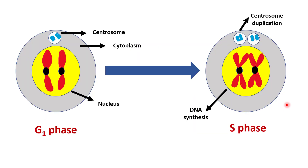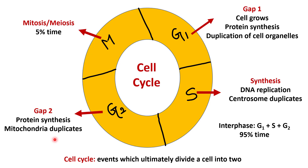Here is the picture — you can see the centrosome gets duplicated and DNA synthesis occurs in S phase. The next phase is G2 phase. In this phase, protein synthesis occurs and mitochondria gets duplicated.